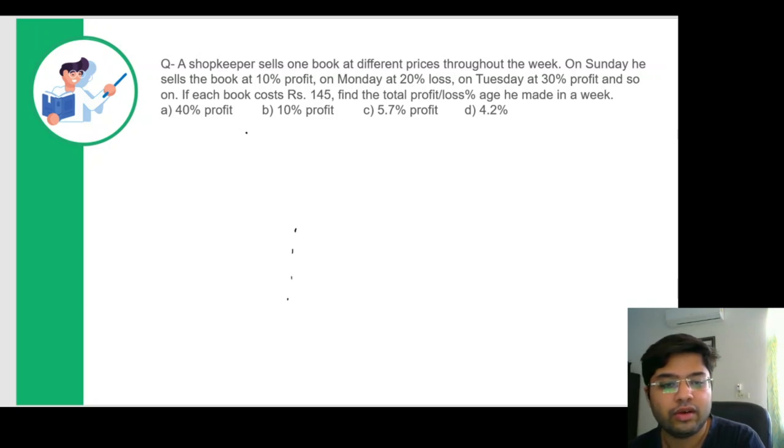So let's assume that the cost price of each book is 100X and not 145. So the CP is 100X. On day one, when it's 10% profit, it would be 110X would be the selling price. On day two, it will be 80X.